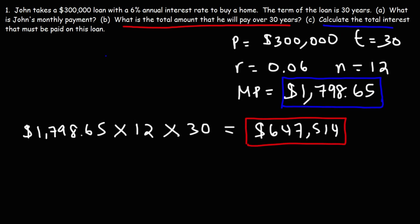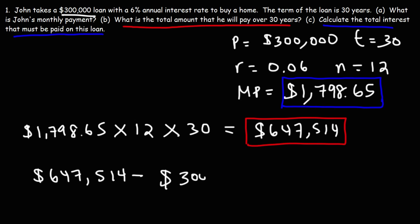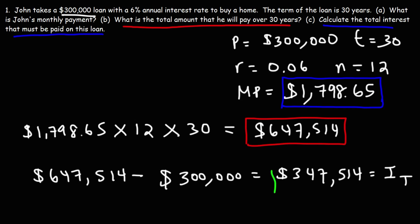Now Part C: calculate the total interest that must be paid on this loan. To get the total interest, we take the total amount of cash he's going to pay over 30 years and subtract the original value of the loan, which is $300,000. That gives us $347,514. That is the total interest paid over the course of 30 years — you can think of it as the true cost of the loan.